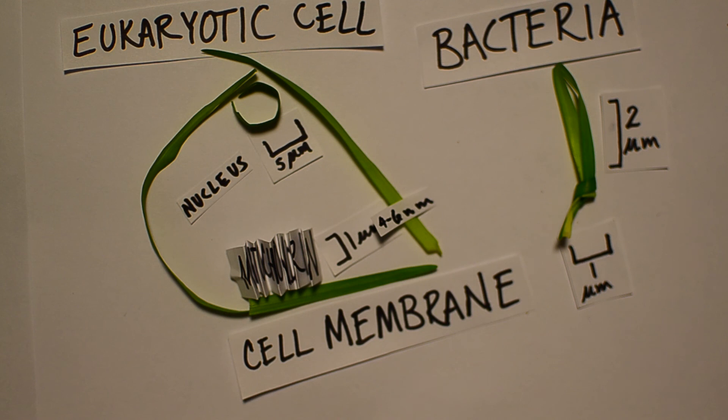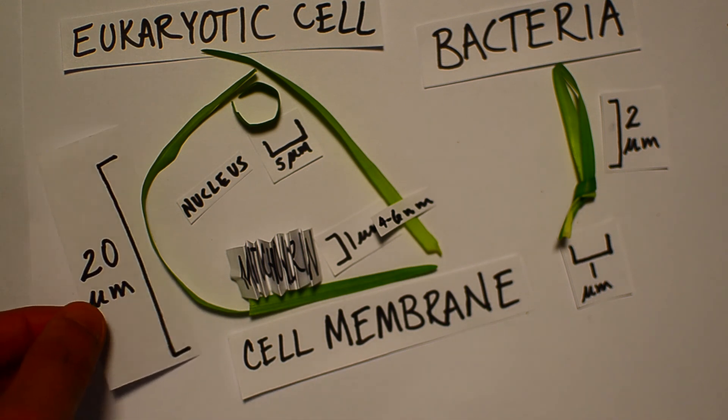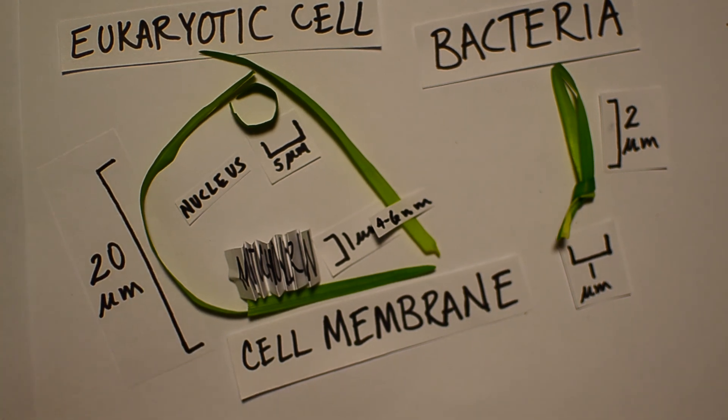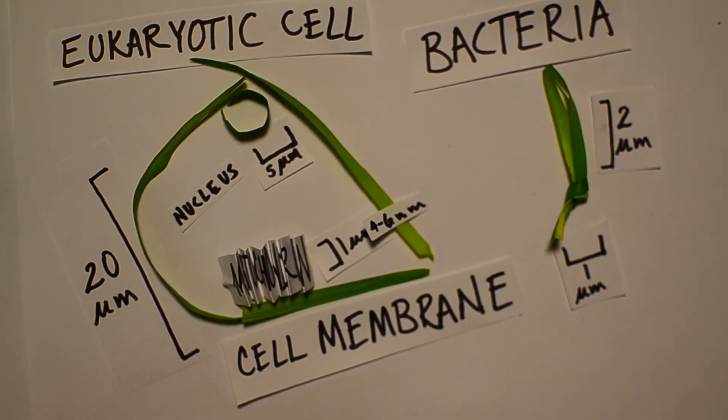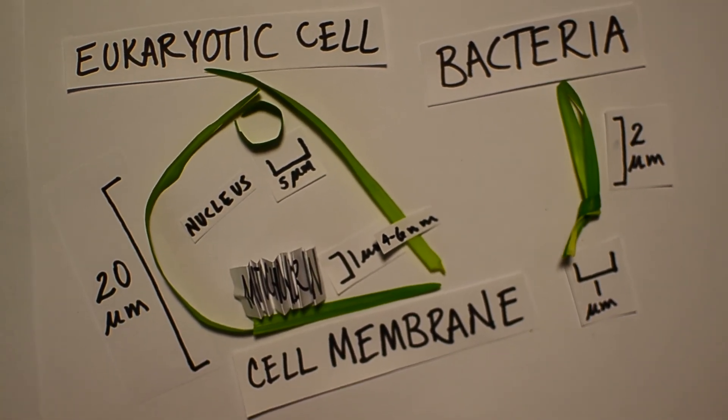And finally, the big reveal. What's the diameter of a eukaryotic cell? It's got to be fairly large to encapsulate things like the nucleus and mitochondria. Well, the diameter of a eukaryotic cell is about 20 micrometers, which is 10 times the length of that bacterium.